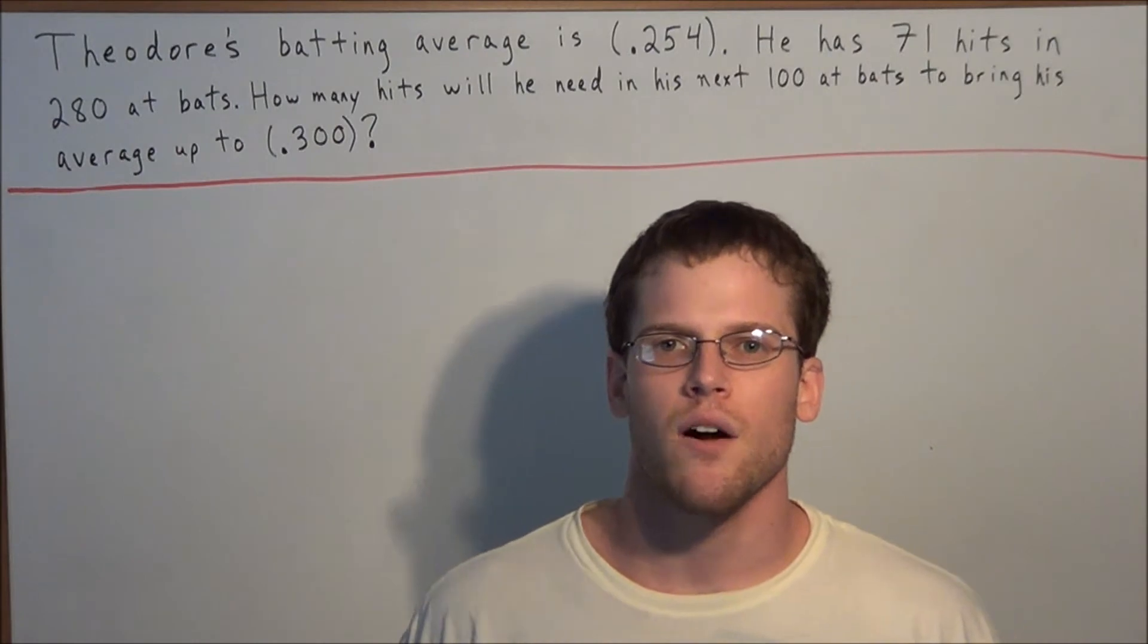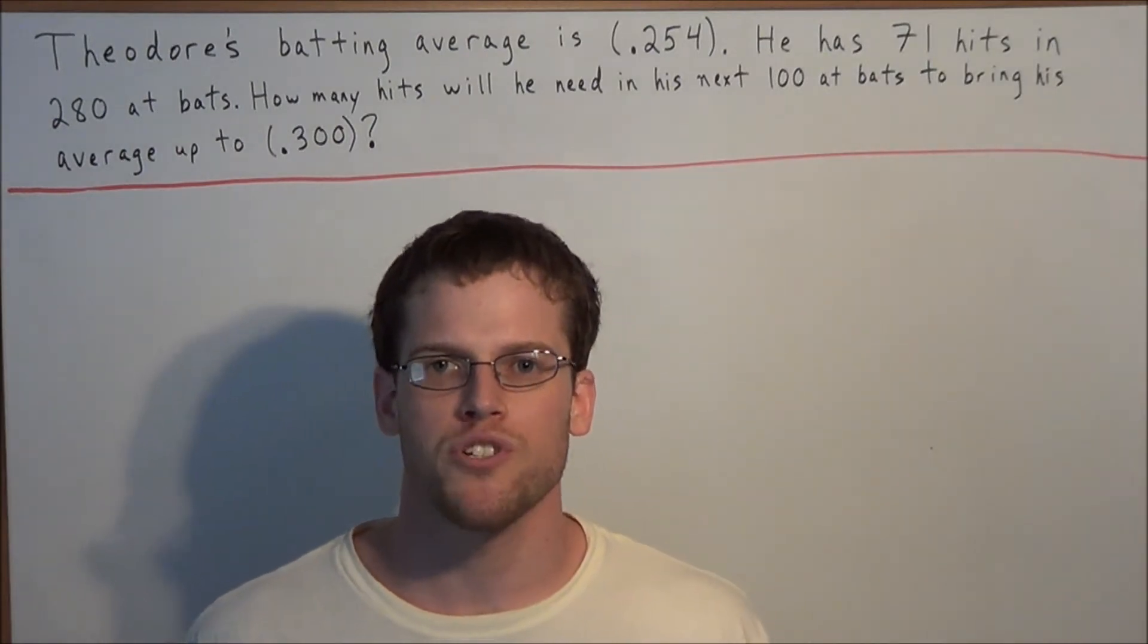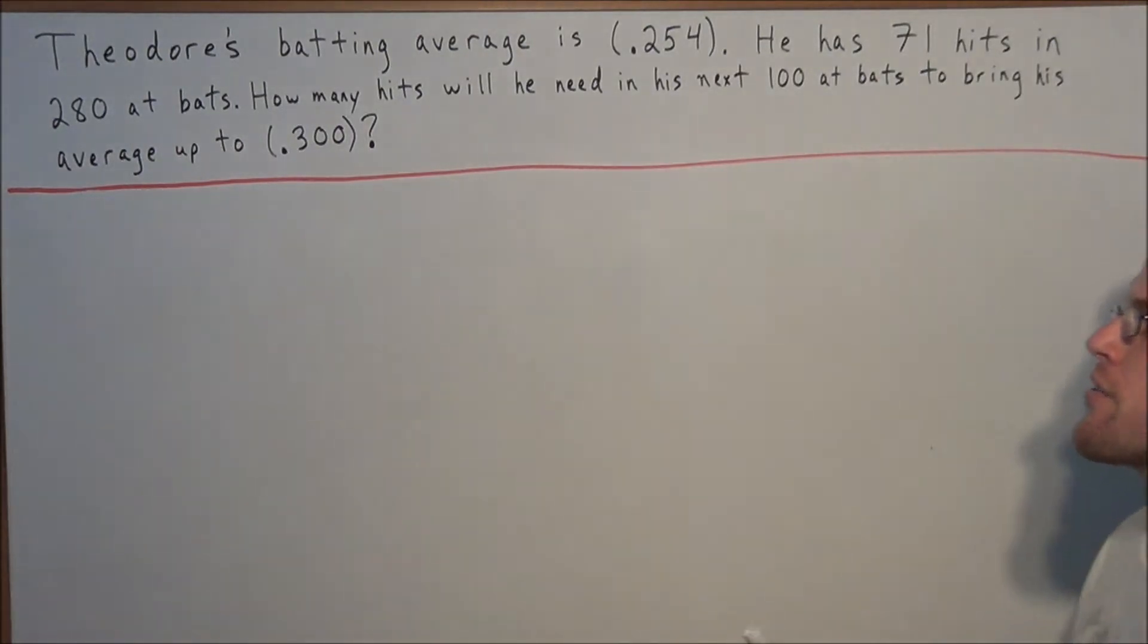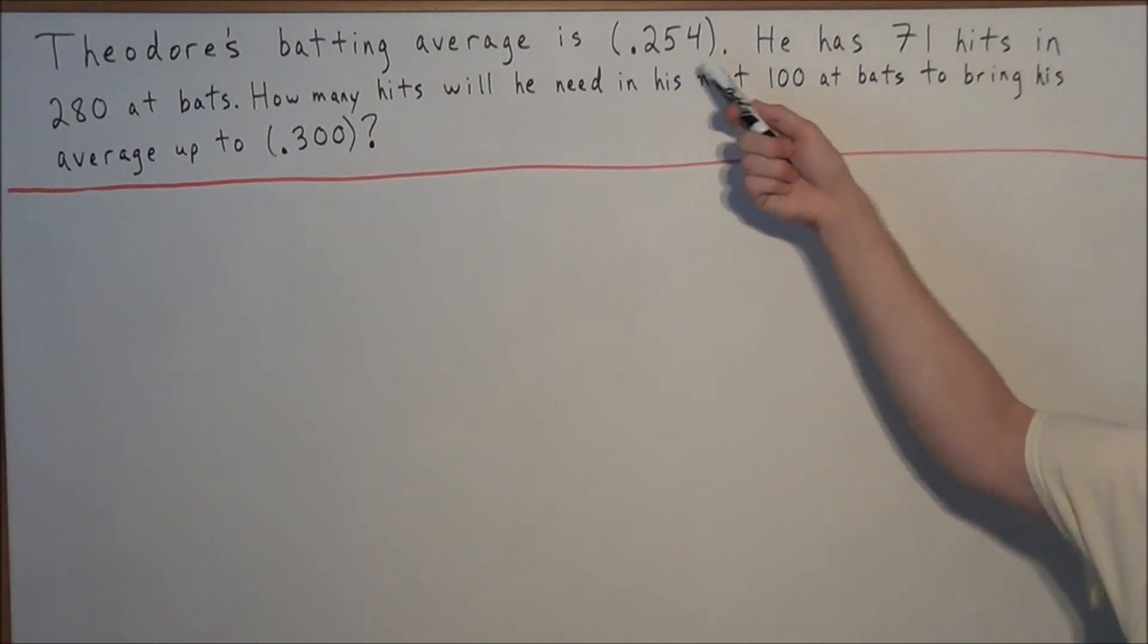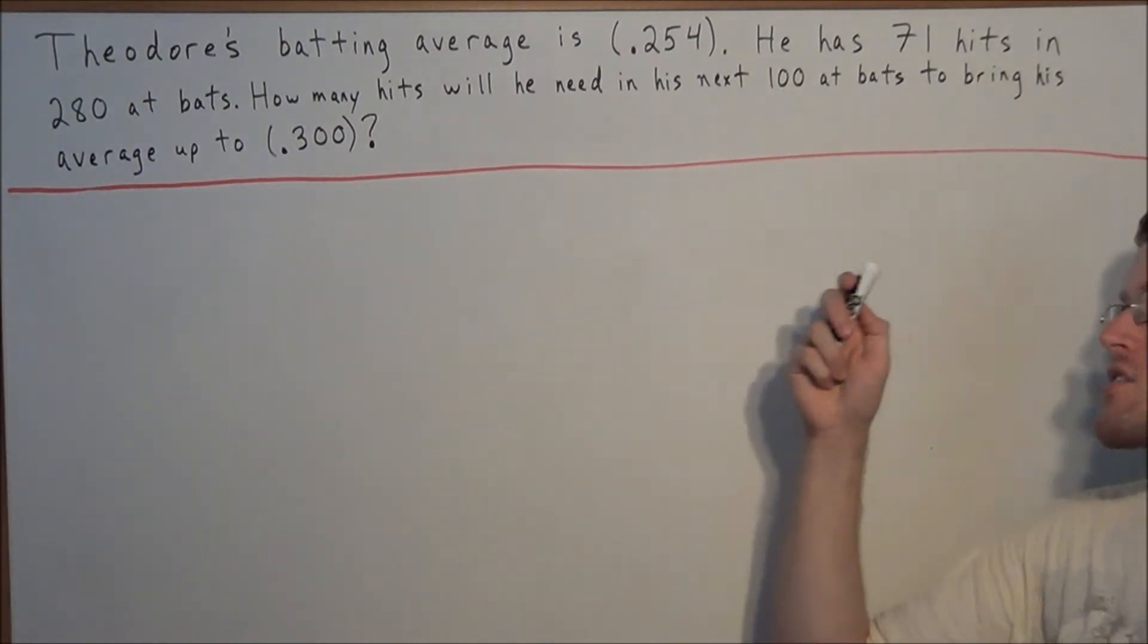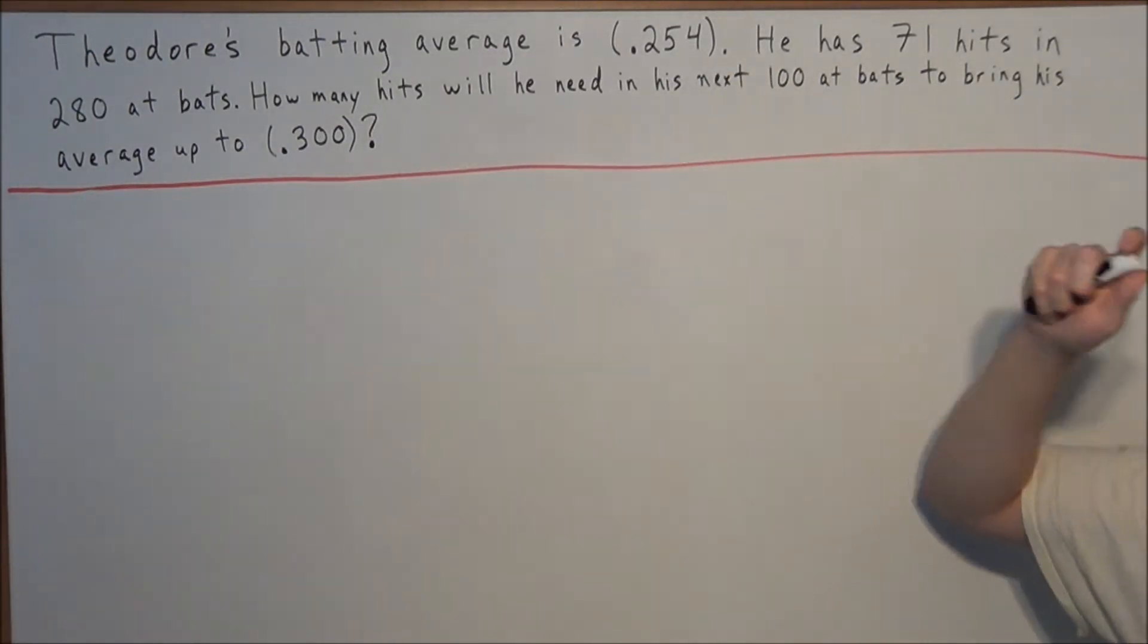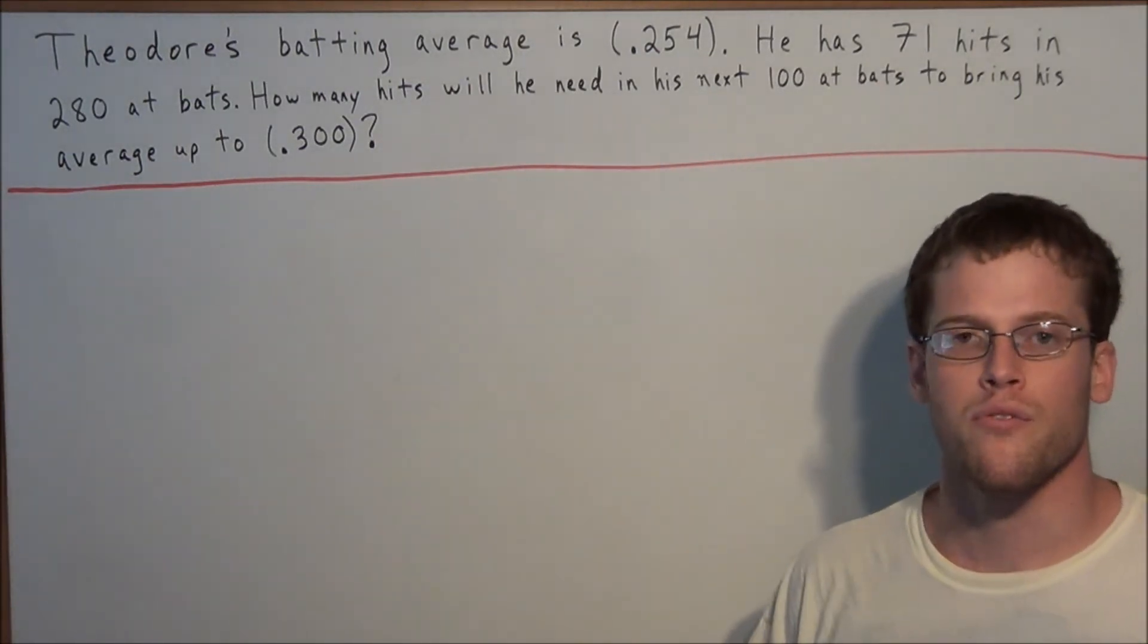Hi, my name is Vincent and today I want to take a look at a proportion word problem. We have Theodore's batting average is 254, he has 71 hits and 280 at bats. How many hits will he need in his next 100 at bats to bring his average up to 300?